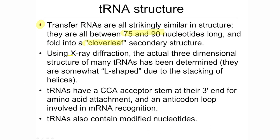There's a tertiary structure to RNAs — they all fold in three dimensions. Two very important functional regions on the tRNA: a CCA acceptor stem at the three-prime end, where an amino acid attaches; and an anticodon loop involved in mRNA recognition. Part of this molecule knows how to speak RNA language, and part of it knows how to speak protein language — that's how it's the decoder. Modified nucleotides also exist in tRNAs, such as inosine, which may be important in recognition and differentiation of these very similar transfer RNAs.